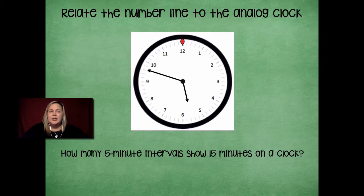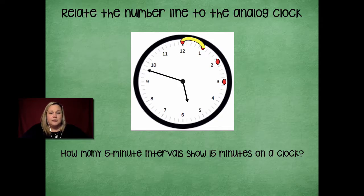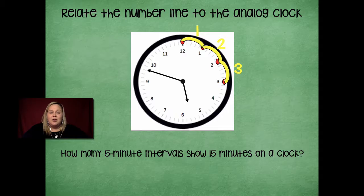I'm going to count around by fives to get to 15: five, ten, fifteen. I have four dots on my clock to represent where I started and where I ended. But remember, that's not the interval — the interval is the space in between. So counting the spaces: one, two, three. There are three five-minute intervals on a clock that show 15 minutes.